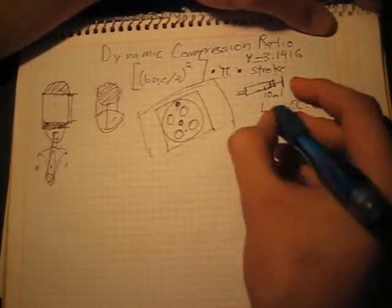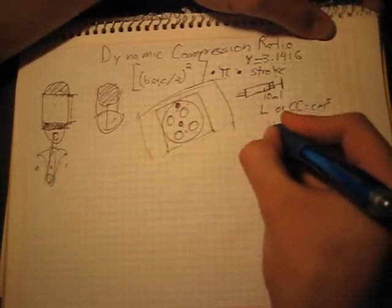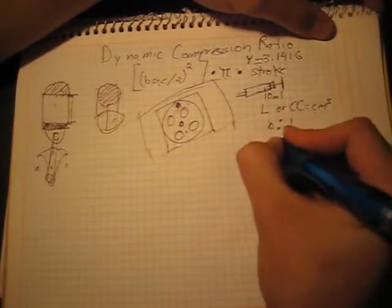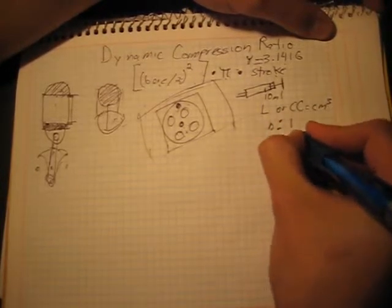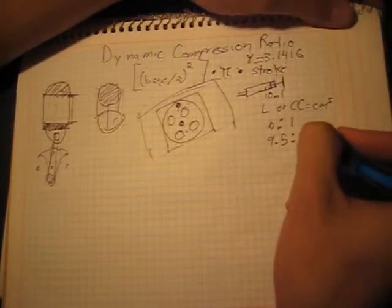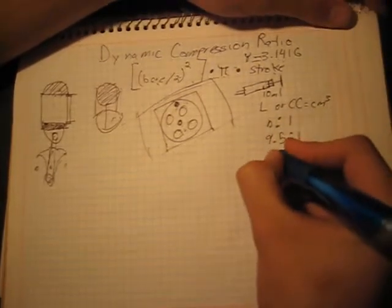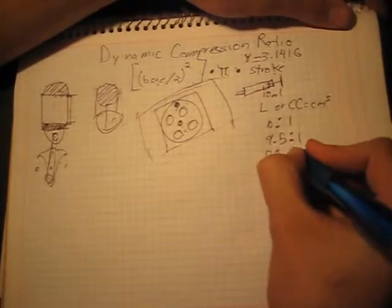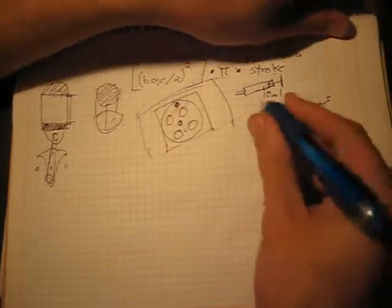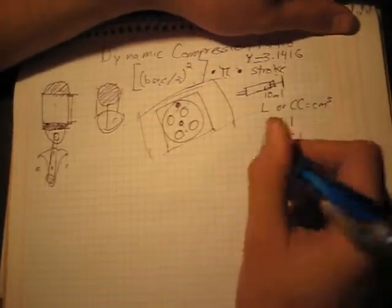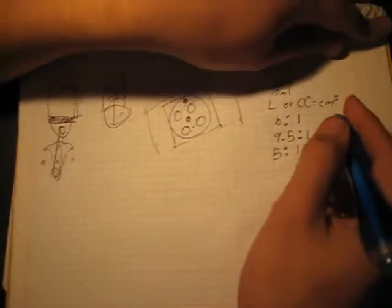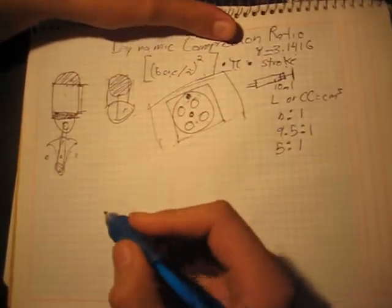And then you get this volume, whether it's in liters or in cc's, which is cubic centimeters. Now, this volume is divided by this volume, and that's your compression ratio. So it's sometimes written as n to 1. So 9.5 to 1, that's a high compression engine. Or a lower compression one, which is 5 to 1, that's super low compression. That's what people mean when they say low or high compression.